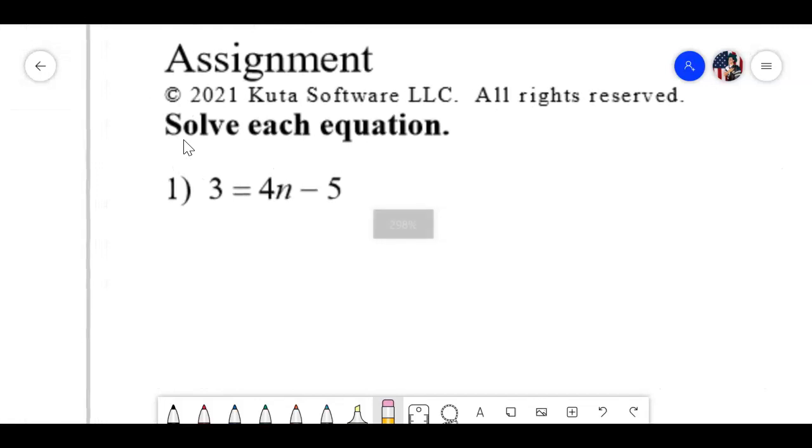So let's look at number 1. If I'm solving this, I see I have a variable n over on the right side, and there are two things I need to get rid of. A 4 and a minus 5, right? Here's the deal. You've got to know what to get rid of first, and I always get rid of what I call the loner.